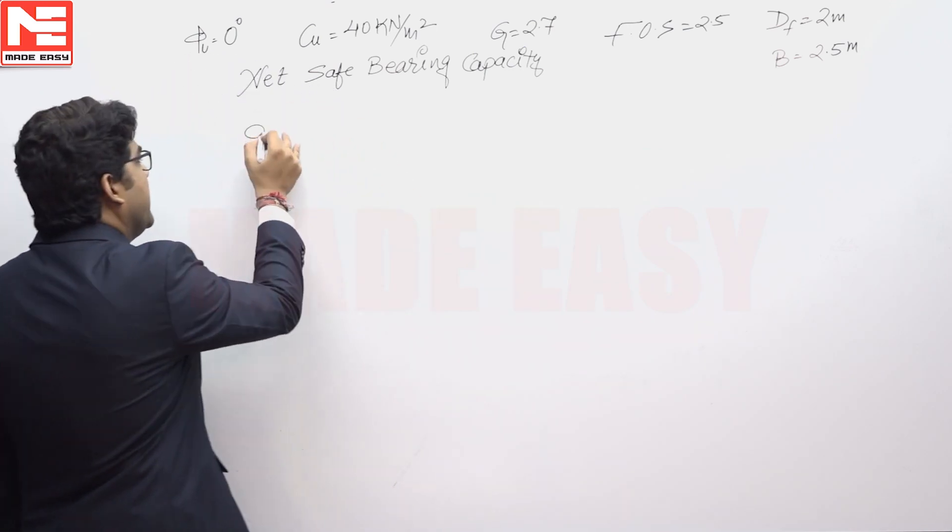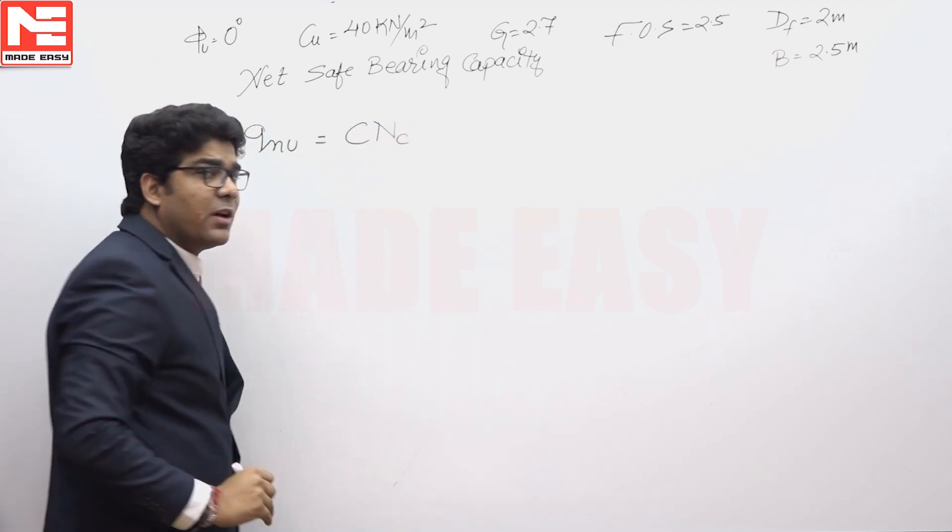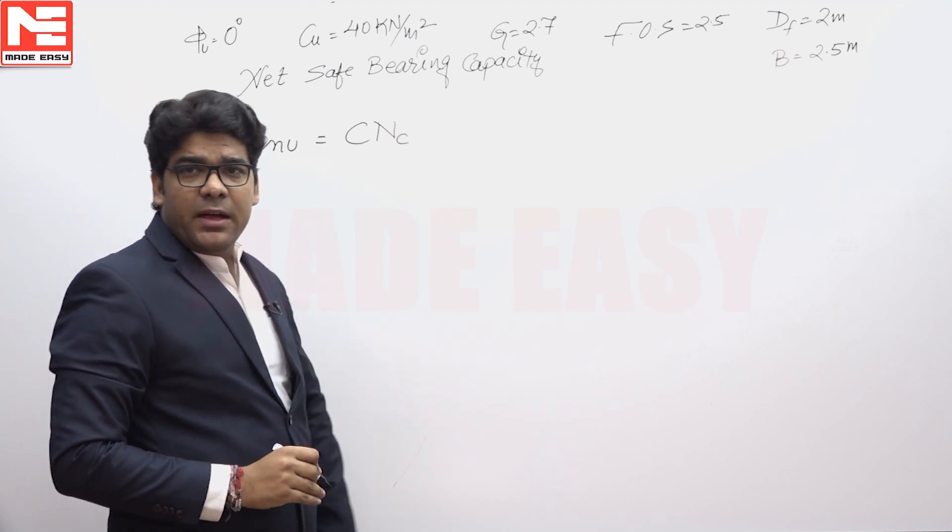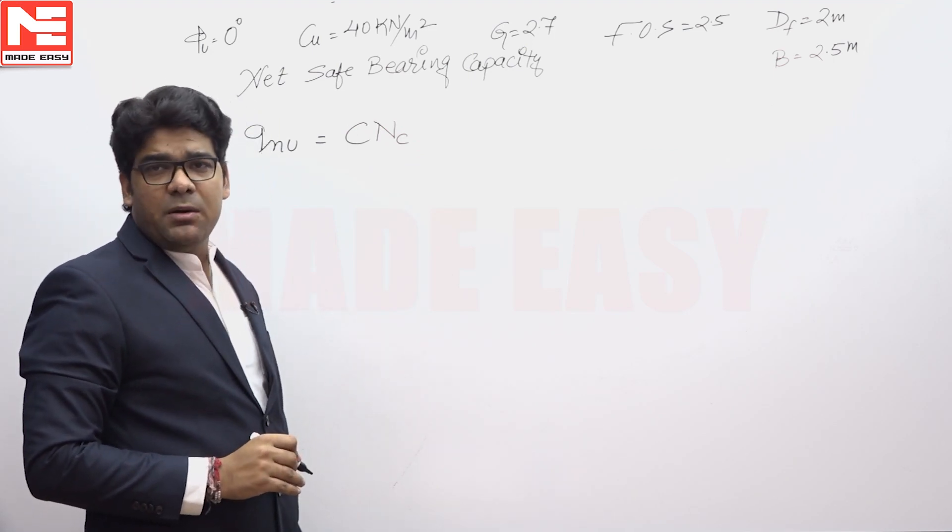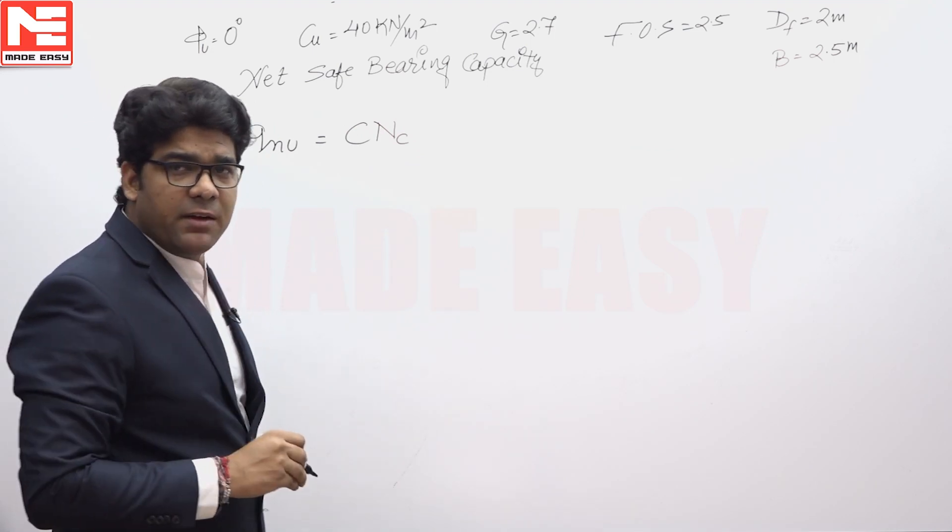According to Scampton, the net ultimate bearing capacity QNU is equivalent to C times NC, which is valid for clay only. NC is the Scampton bearing capacity factor that depends upon DF by B. So first of all, we have to check DF by B.